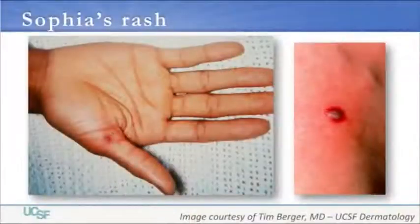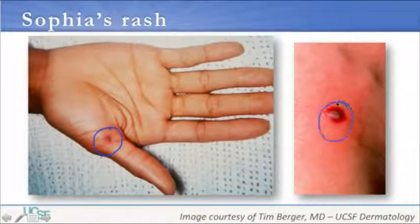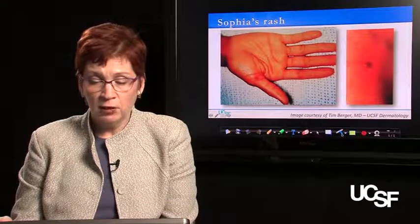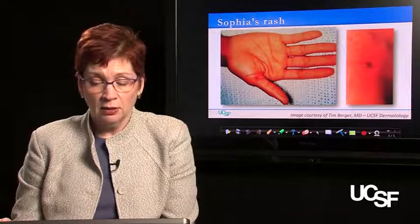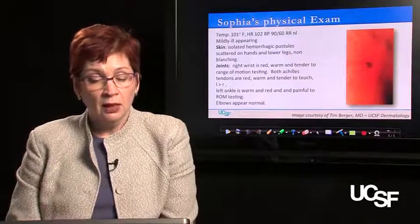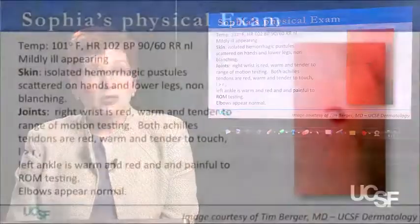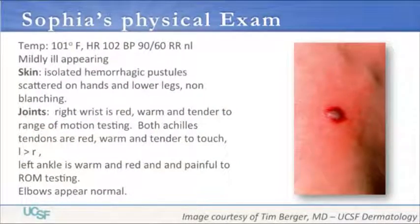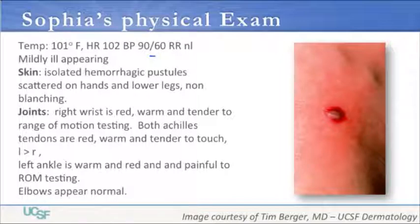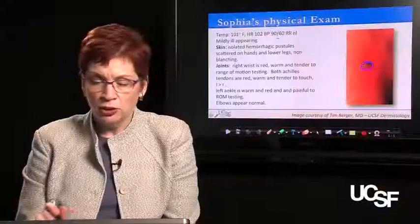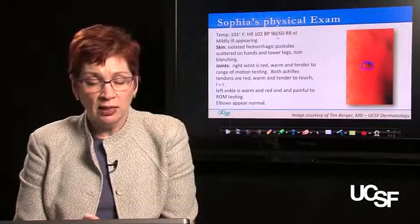This is Sophia's rash — you can see redness there with a close-up view. She has similar spots around her ankles and on her other hand. Sophia also has a fever; her temperature is 101 degrees Fahrenheit, her heart rate is slightly elevated at 102, and she has a normal blood pressure for age with a normal respiratory rate. She appears mildly ill, and her skin shows isolated hemorrhagic pustules — meaning they have a bloody appearance — with some inflammation scattered on her hands and lower legs.